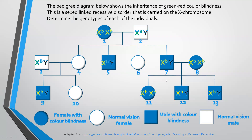Number four has to be heterozygous, because number nine is a male. The Y chromosome came from the father, which means the X with the recessive allele definitely had to come from his mother. And number four, being normal, would also have a normal allele. So number four is definitely heterozygous.